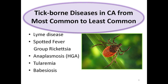The most common tick-borne disease in California is Lyme disease. After Lyme disease, the most common tick-borne diseases are the spotted fever group rickettsiae, such as Rocky Mountain spotted fever, followed by diseases caused by bacteria, including anaplasmosis and tularemia. Babesiosis, caused by a parasite, is a rare disease in California.